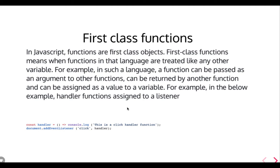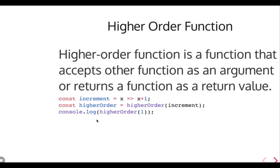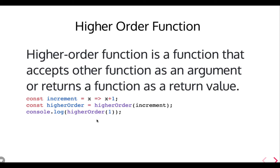What are first class functions? In JavaScript, functions are first class objects. First class functions means functions in that language are treated like any other variable — you can create anonymous functions, assign functions to variables, pass functions into other functions, and return a function from another function. Functions can be returned by another function and can be assigned to a value or variable. For example, a handler variable can hold an anonymous function that is assigned to it.